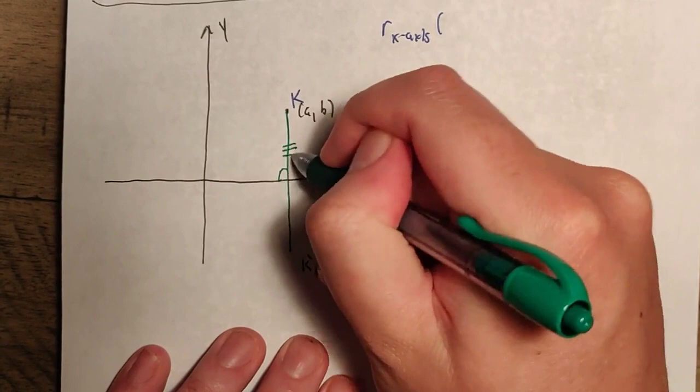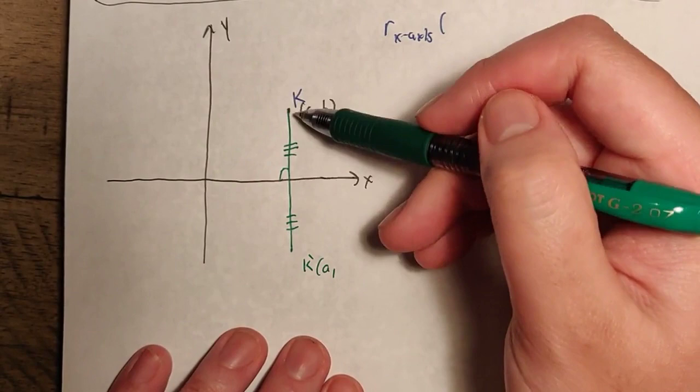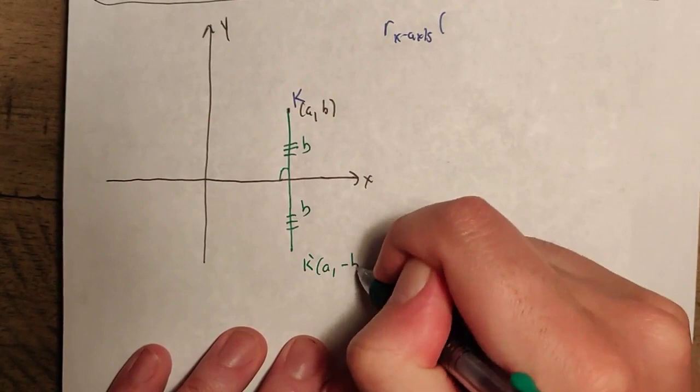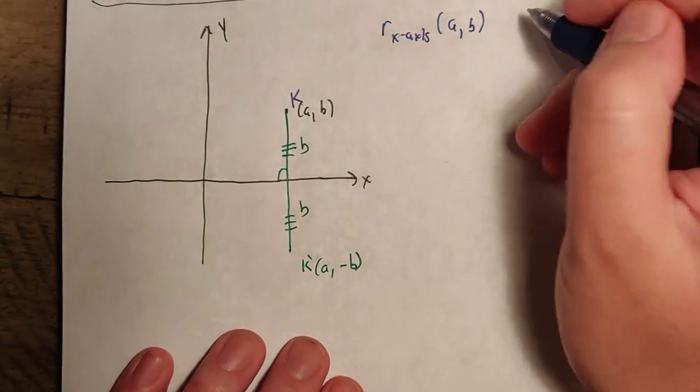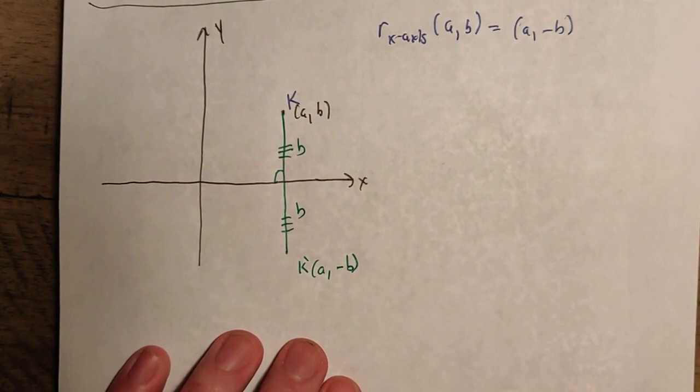We also want these distances to be exactly the same. Since the line is vertical, this is B units up here, and B units over here, so it's going to be B units down here — but now we're going in the opposite direction. This is going to be A, negative B. So if we have point A, B and reflect it over the x-axis, we get A, negative B. That's going to be important.